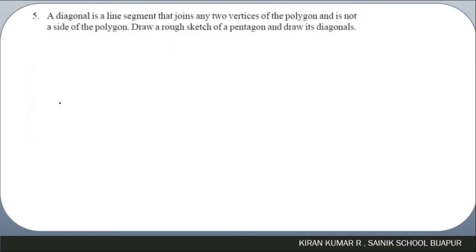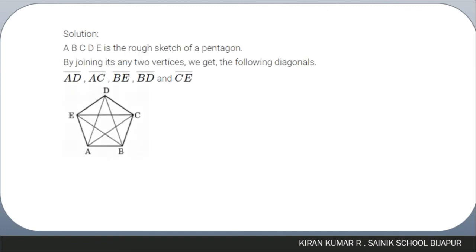Question five: a diagonal is a line segment joining two vertices of a polygon that is not a side of the polygon. For a pentagon ABCDE, the diagonals are AD, AC, BE, and BD, and CE — there are five diagonals in a pentagon.